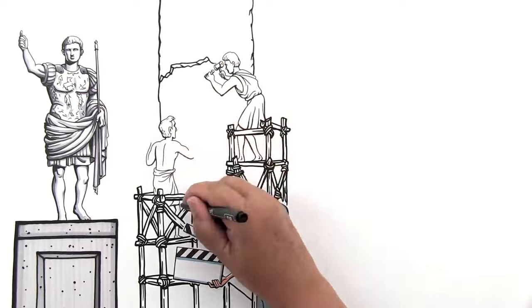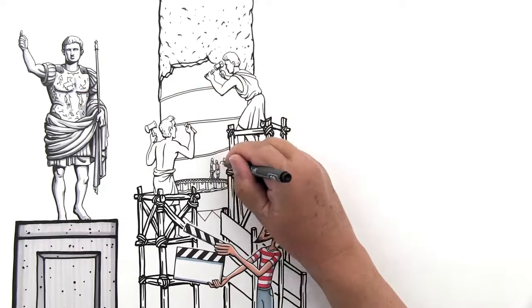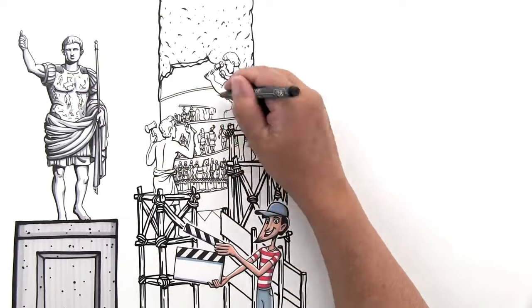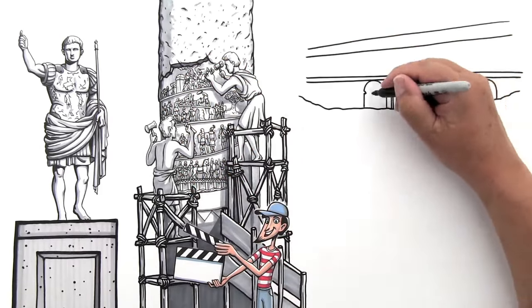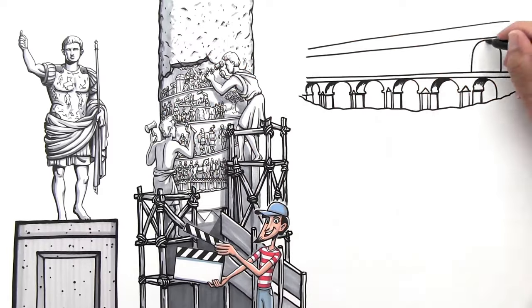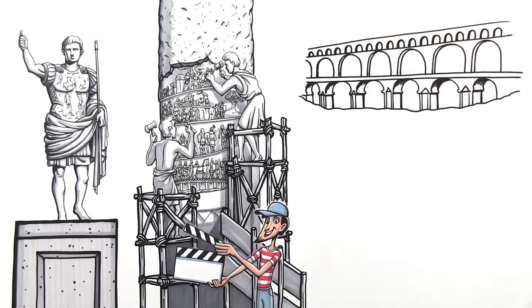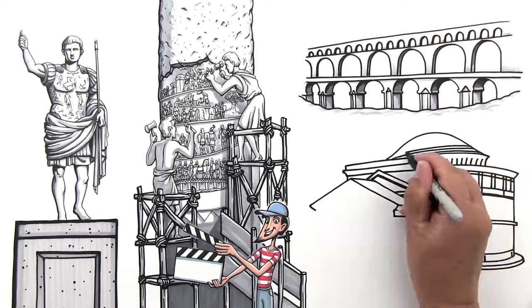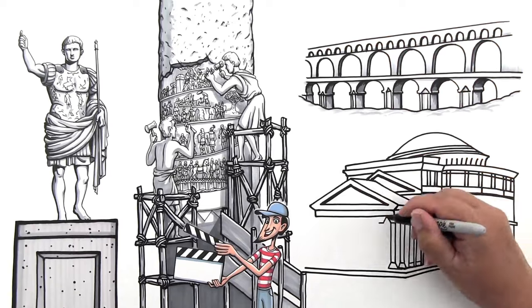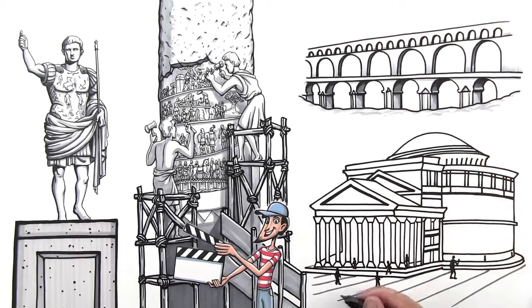Trajan's column is like a movie scenario in stone. The sculpted scenes depicting Roman battles and their ultimate victory. Roman architects became masters of the arch and the dome. The arch was a huge innovation for the creation of bridges and aqueducts. And the dome became the staple of big official buildings, like the Pantheon, which became one of the most influential buildings in Western architecture.